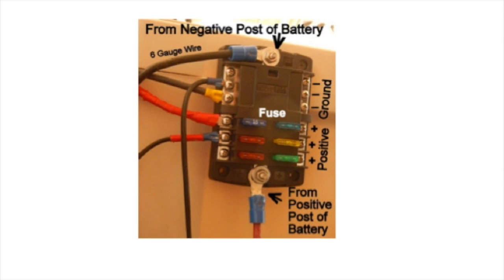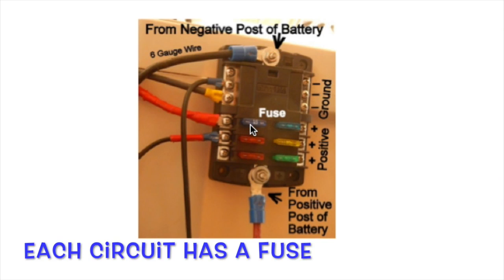Now there are several ways that you can go about running your 12 volt system. Probably one of the best and simplest ways is to run from your deep cell 12 volt battery to a wiring block like this one. And in this case there are six circuits available to run to different things that you're going to be powering in your cabin.